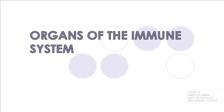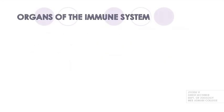The coordinated action of organs and cells together imparts us with immunity. Organs of the immune system are found distributed throughout the body — there are many such organs found throughout our body.